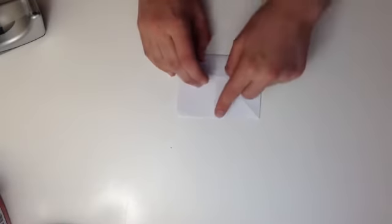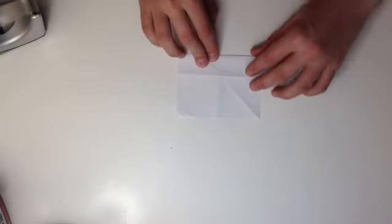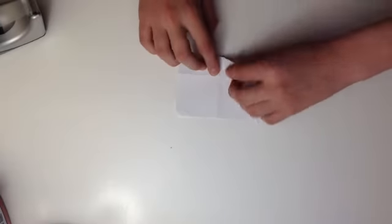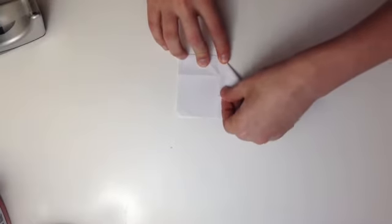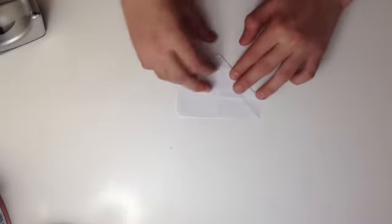Now you have a little line here. Using this point right at the end of the guideline, you're going to take this edge and align it with the center fold. Make a crease. Do the same to the other side.